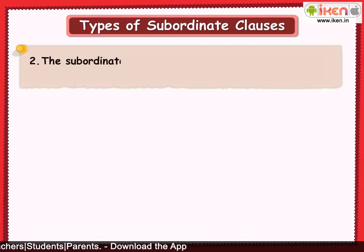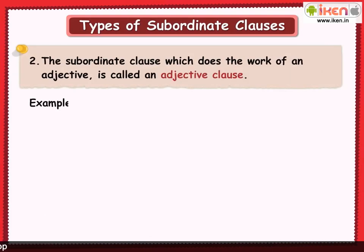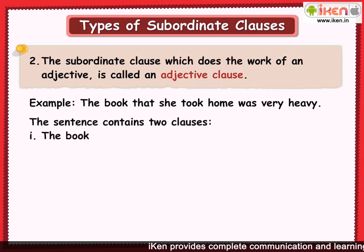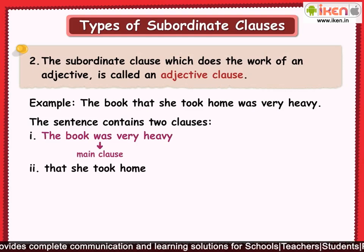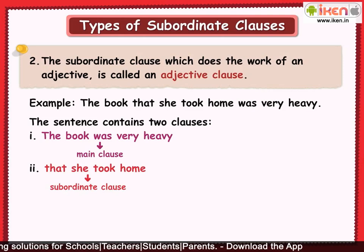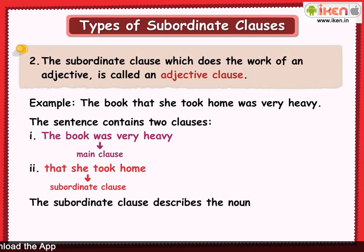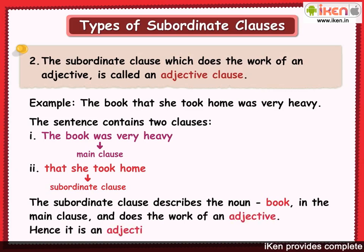The subordinate clause which does the work of an adjective is called an adjective clause. For example: 'The book that she took home was very heavy.' This sentence has two clauses: 'The book was very heavy' and 'that she took home.' The second clause is the subordinate clause and describes the noun 'book' in the main clause, doing the work of an adjective — hence it is an adjective clause.